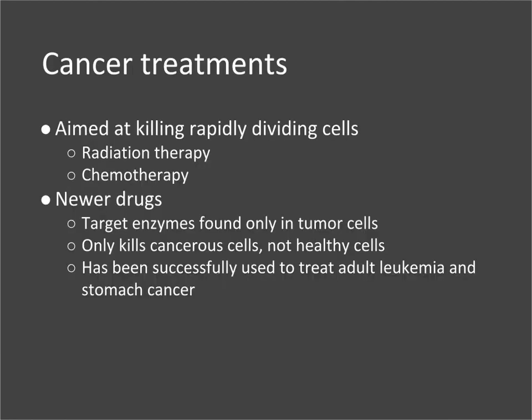There are some treatments for cancer, with success depending on the type and how far it has spread. Traditional treatments include radiation therapy and chemotherapy, both aimed at killing tumor cells and rapidly dividing cells, sometimes used with surgery to shrink a tumor before removal. Newer drugs are being developed that can target enzymes found only in tumor cells, making them much more targeted.